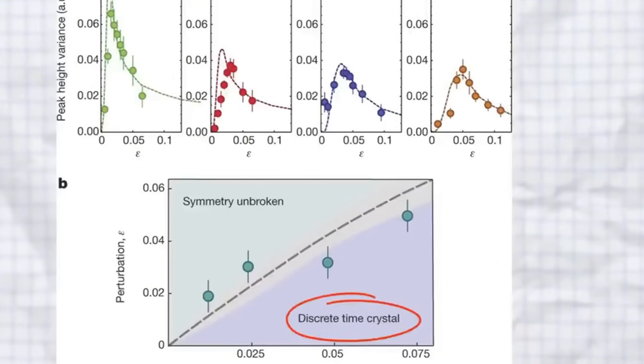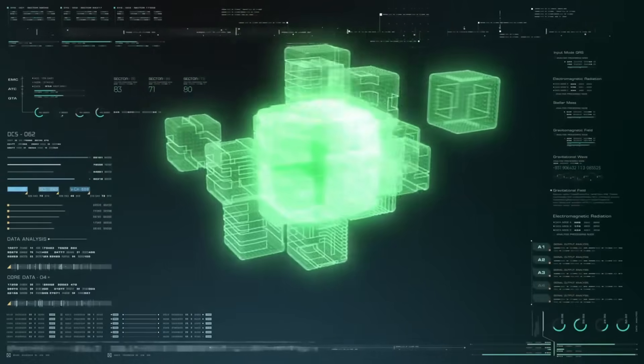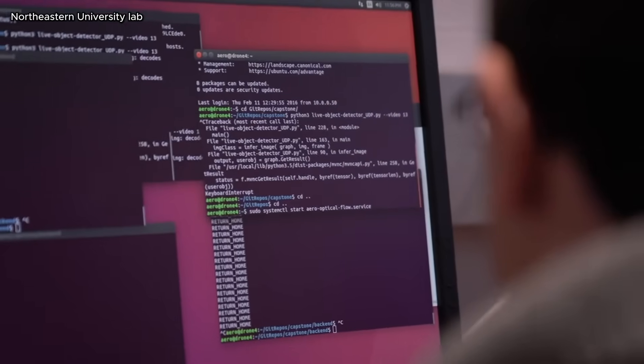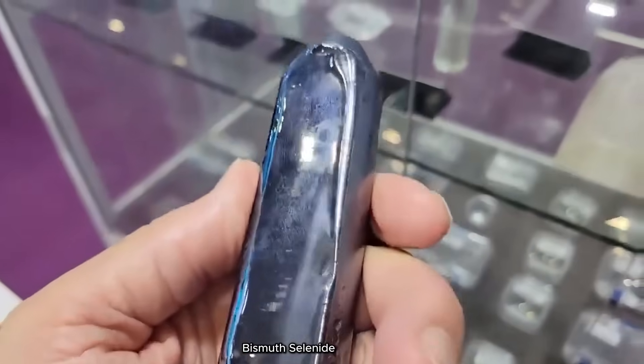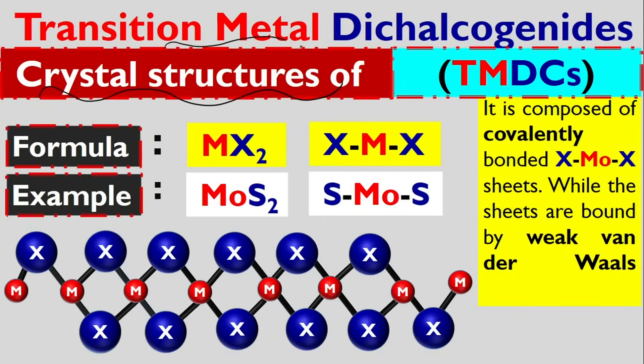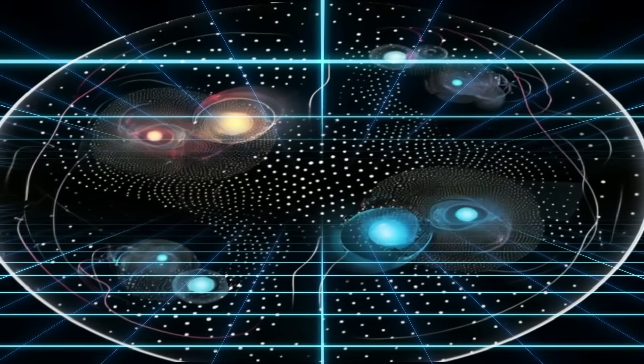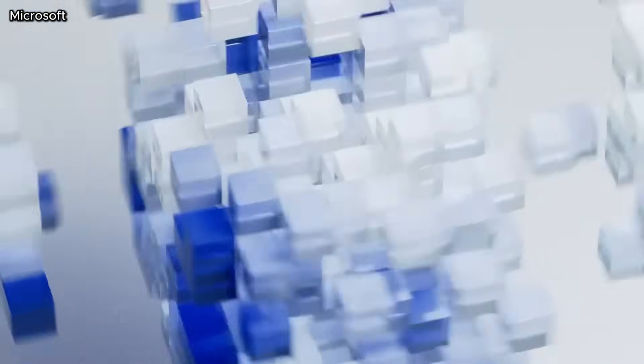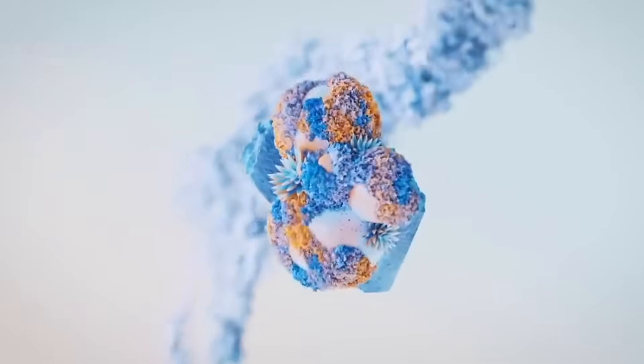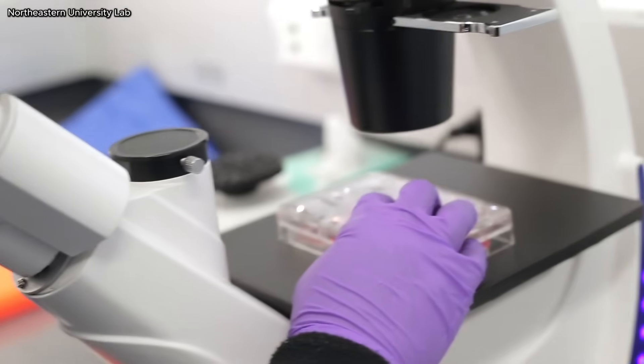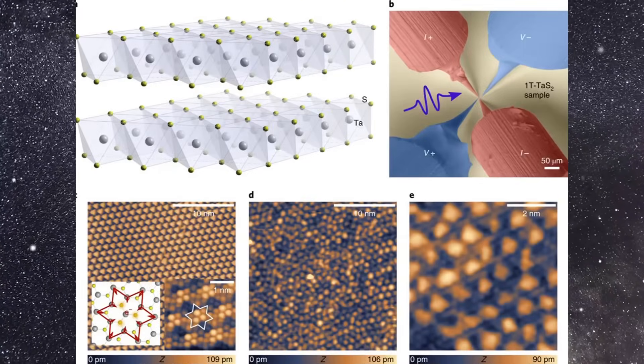Imagine scientists studying a routine experiment when suddenly their instruments show something completely unexpected. That's exactly what happened in the Northeastern University lab in 2020. We were layering two ultra-thin materials, bismuth selenide and a transition metal dichalcogenide, when our instrument started showing something bizarre, explains physicist Swastik Kar. The electrons had spontaneously organized themselves into a perfectly ordered crystalline grid, a lattice made purely of electrons with no atoms involved. Of course we thought something was wrong, Kar admits. The electron lattice was real.